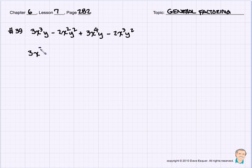So let's move things around. Let's go with a 3x cubed y plus a 3x to the 4th y. Remember, this is a grouping clue. Minus a 2x squared y squared minus a 2x cubed y squared.